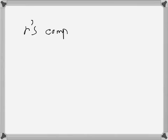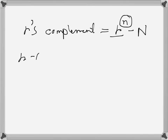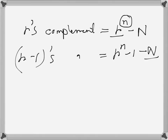Before talking about 9's complement or 10's complement for the decimal number system, let's talk in general for any number system. If we say r's complement, where r is the base of the number system, then r's complement is found like this: r to the power n minus N, where uppercase N is the number and lowercase n is the number of digits. There is also r minus one's complement, which is r to the power n minus 1, minus N.